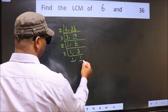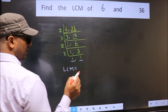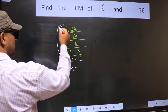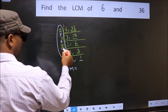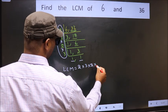We got 1 in both places. So our LCM is the product of these numbers. That is 2 into 3 into 2 into 3.